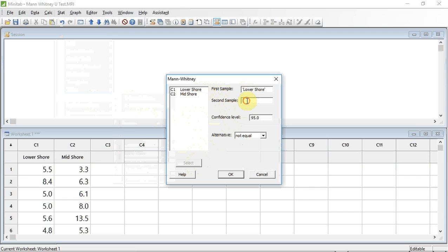I now go to the second sample, click the box if necessary to select it. I'm going to put the mid-shore sample in that. I'm going to select it and press the select button.